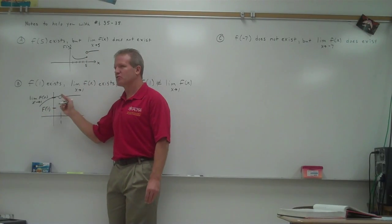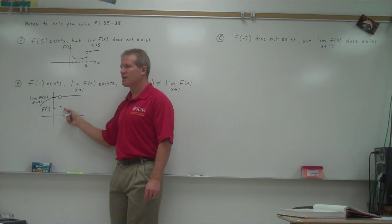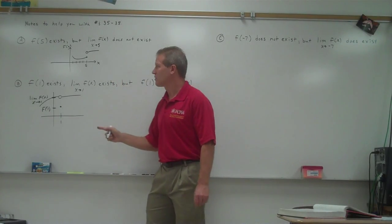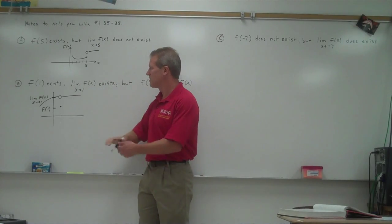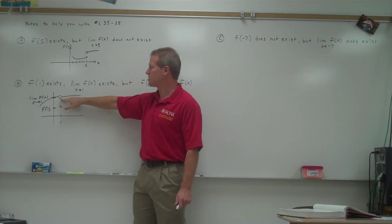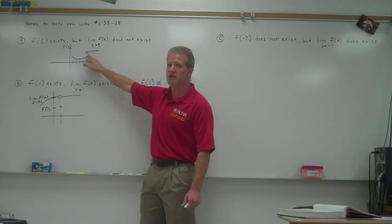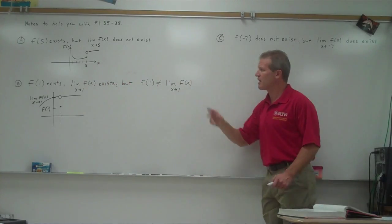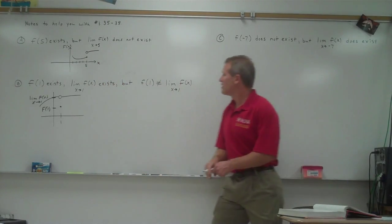But f of 1 would be down here. This is an example where the two-sided limit exists at 1, so f of 1 also exists right here, but they're not equal to each other. Both of these would be discontinuous graphs. This would be point or removable discontinuity. This would be jump discontinuity. f of 5, f of 5 here, and f of 1 here. All right, last one.